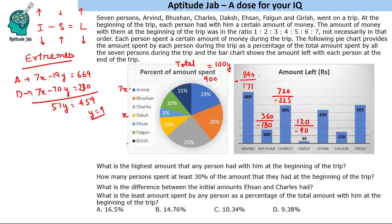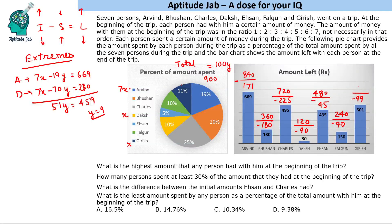Ihsan spent 5% equals 45 and has an initial amount of 480. Fagun spent 10% equals 90 and has an initial amount of 240. Girish spent 11% equals 99 and has an initial amount of 600. So the full set of initial amounts is 120, 240, 360, 480, 600, 720, 840 — perfectly satisfying the ratio 1:2:3:4:5:6:7. No need to check the Girish case.